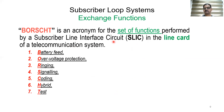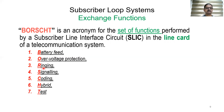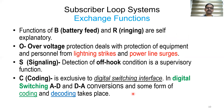BORSCHT is an acronym for the set of functions performed by a subscriber line interface circuit in the line card of a telecom system. B stands for battery feed, O stands for over-voltage protection, R stands for ringing, S stands for signaling, C stands for coding, H stands for hybrid function, and T stands for testing function.